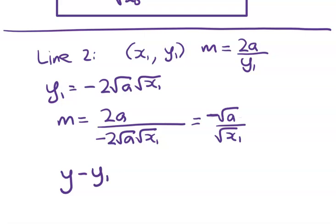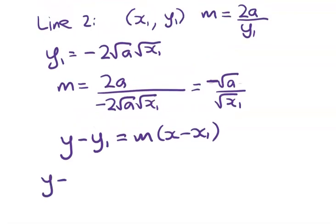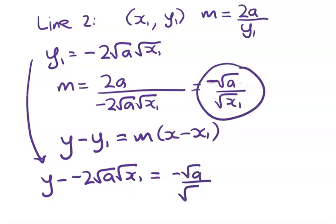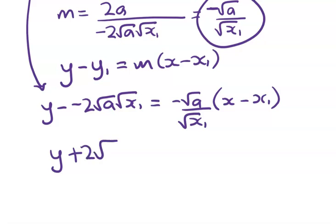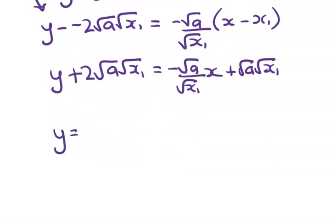So now we're going to have my line y minus y1 is equal to m times x minus x1. Substituting in, what do I get? Well, it's y negative 2 root a root x1 from up here is equal to m, which is over here, negative root a on root x1 times x minus x1. Cleaning up, we get y plus 2 root a root x1 is equal to this. And now I have plus root a, and I have root x1. So it should feel somewhat symmetric with that earlier equation. I'm getting it now into mx plus c form, and I'm going to have minus root a root x1. So that's line two.